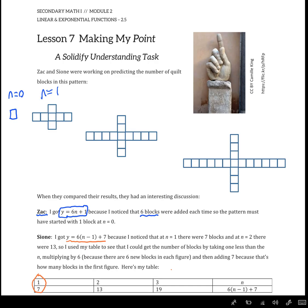So two different ways of writing the same rule. And they are equivalent because if I take Sion's rule, 6 times (n minus 1) plus 7, and I distribute it, I get 6n minus 6 plus 7, which is the same as 6n plus 1. It's the same thing, there's just different ways of writing it. And so the purpose of this task is to introduce something called point-slope form of linear function.